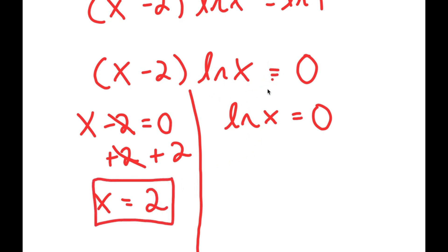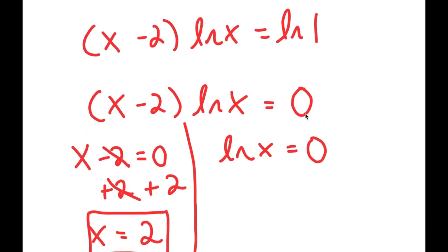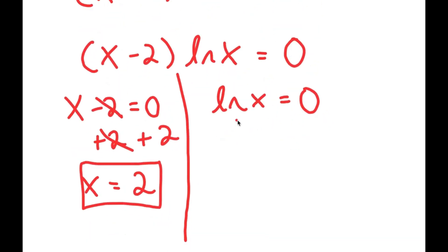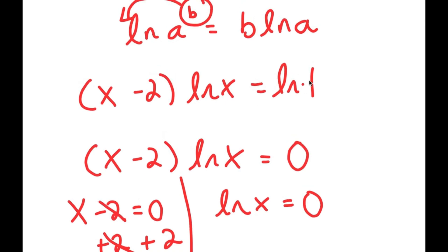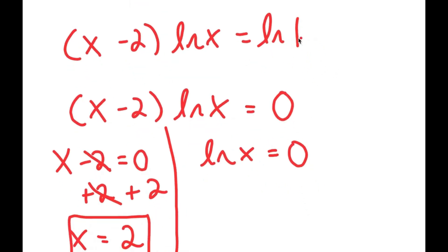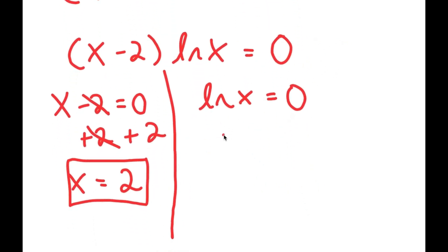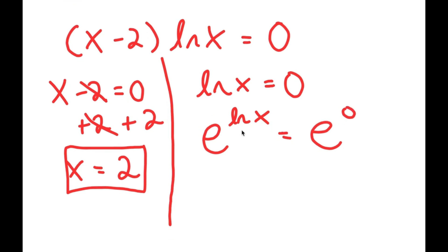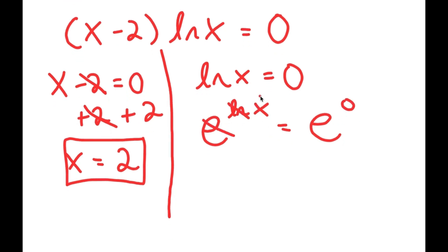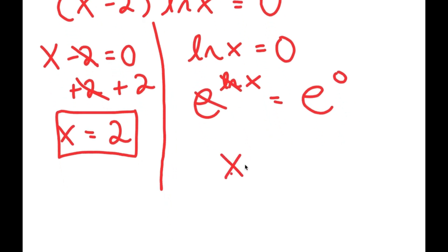For my second equation, I have ln of x equals 0. This is basically asking: ln of what is equal to 0? We already know ln of 1 is equal to 0, but if we didn't know this, what we can do is take e to the power of both sides. So I have e to the power of ln x is equal to e to the power of 0. And e and ln cancel out, so I get x is equal to e to the power of 0, which is 1.